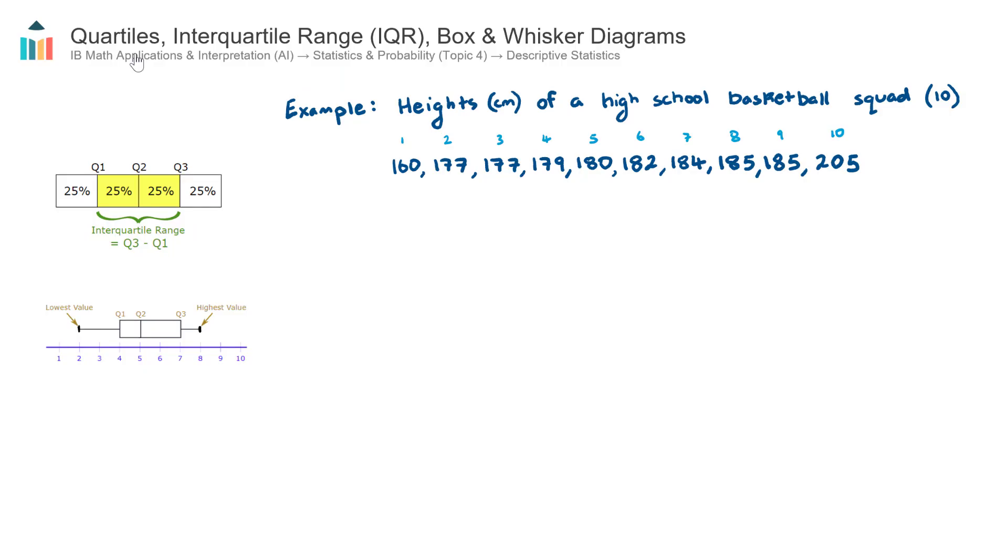In this video we cover quartiles, interquartile range, and box and whisker diagrams. These concepts are found in the AI course in Topic 4, Stats and Prob, under the subtopic of descriptive statistics.